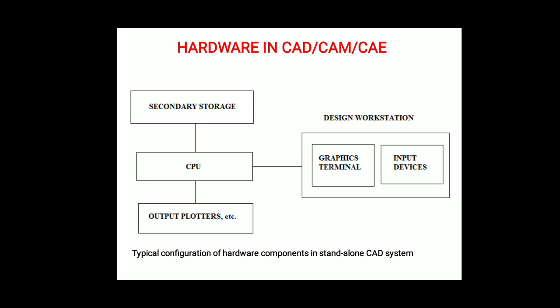The hardware in CAD/CAM/CAE includes the design workstation, digital computer (CPU), output devices such as plotters and printers, and various secondary storage devices. Let's look at the function of the design workstation.